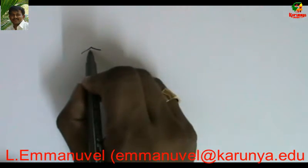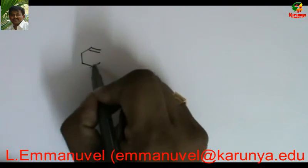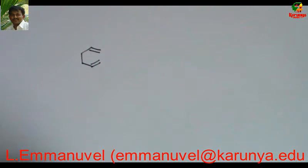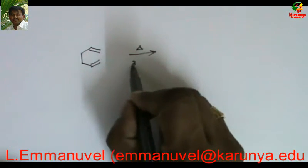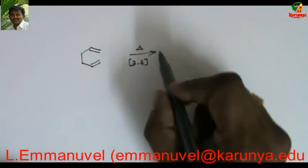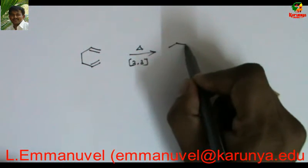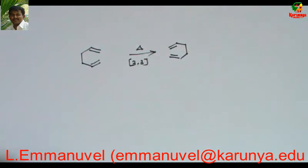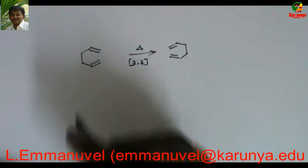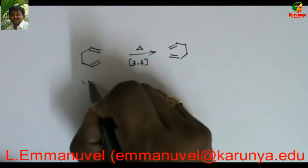1,5-dienes can undergo 3,3-sigmatropic rearrangement upon heating to give rearranged product. I mentioned this is 1,5-dienes.